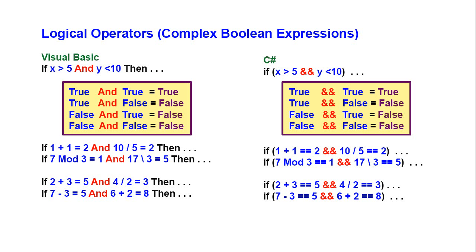The first one is the AND operator. If x is greater than 5 AND y is less than 10, then I'm going to do something. That whole expression, x greater than 5 AND y less than 10, will be evaluated together as either true or false. Looking at this truth table in the yellow box: if each expression on both sides of the AND operator are true, that whole expression will be true. But if one of the sides is false, then that expression is false.